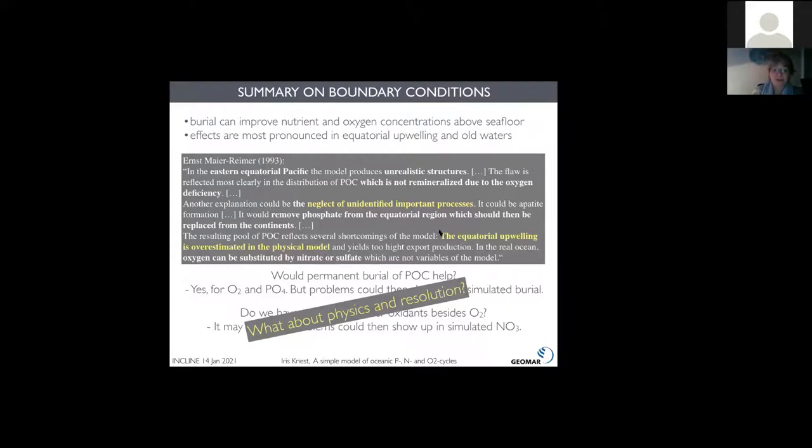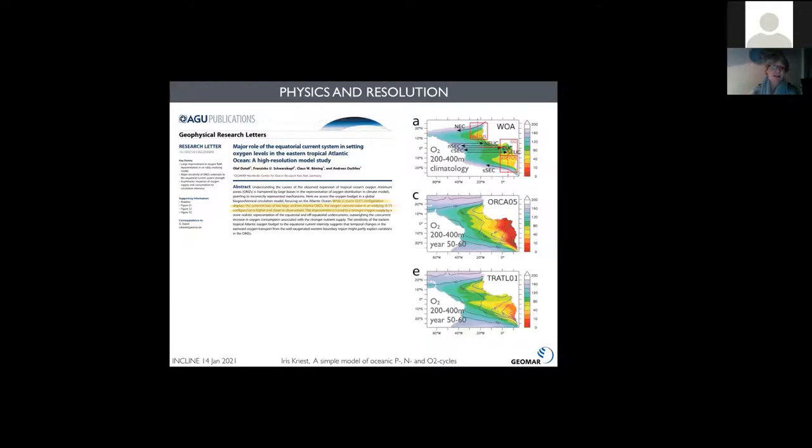Coming back to Reimer's work, we have checked the other oxidants beside oxygen, and it helped in a way, but then the problem showed up in nitrate. The final one of the third idea of Ernst Mayer Reimer was physics and resolution. He said that the equatorial upwelling is overestimated by the physical model. Now that would be a physical process that causes the problems. In fact, we have a model like this one by one degree, which is very likely not sufficient to resolve, for example, the equatorial current system.